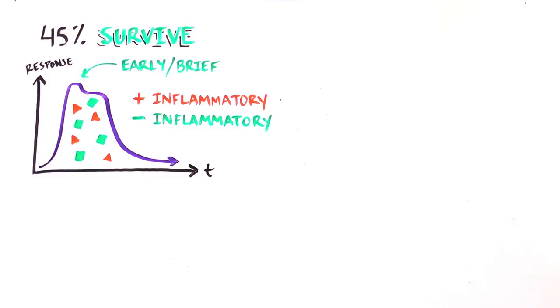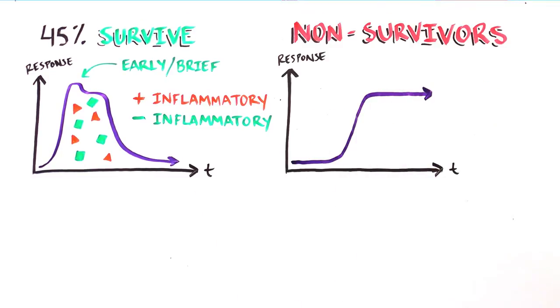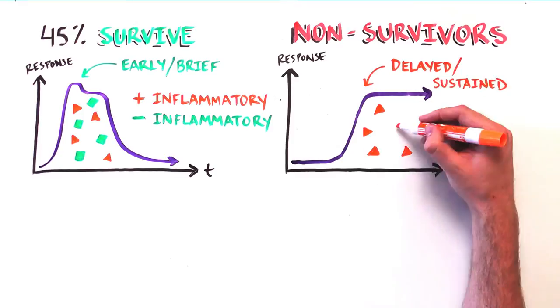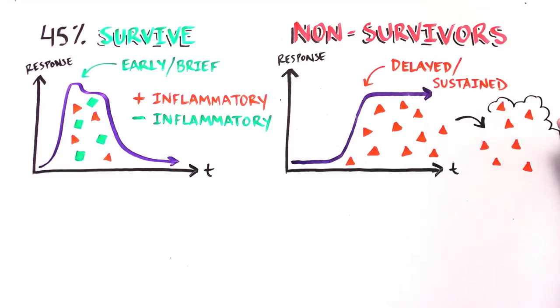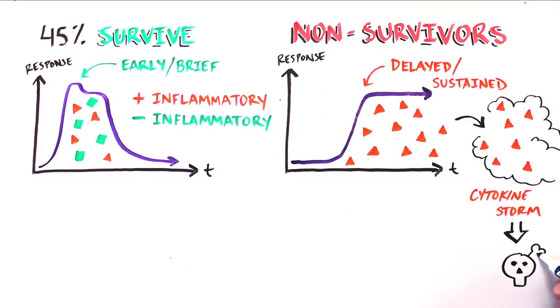Instead, those that die from the disease had a delayed immune response that was only pro-inflammatory, leading to the cytokine storm which kills the patient.